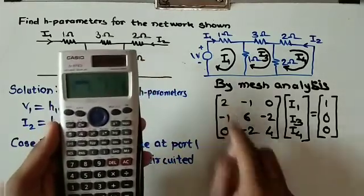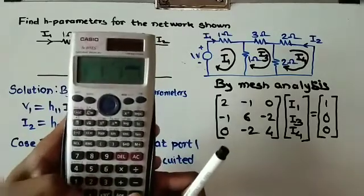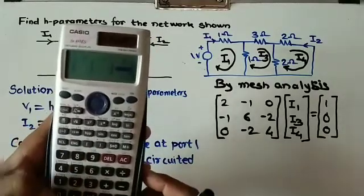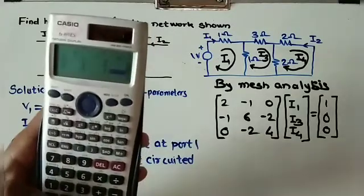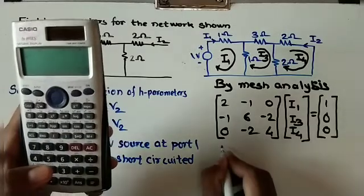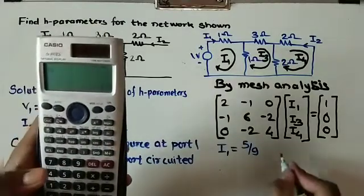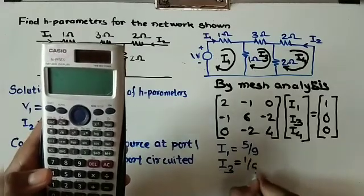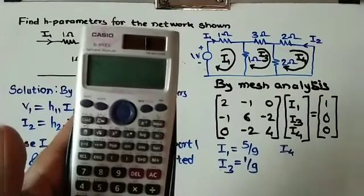We enter the matrix values: row 1 is 2, -1, 0, 1; row 2 is -1, 6, -2, 0; row 3 is 0, -2, 4, 0. After entering and solving, we get i1 equals 5/9, i3 equals 1/9, and i4 equals 1/18.